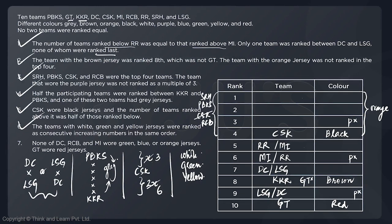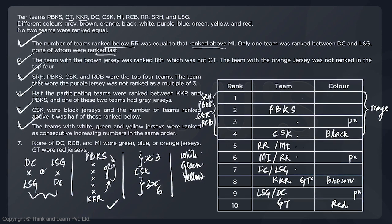Going back to statement four: KKR is now fixed at rank eight, and we need five teams between KKR and PBKS. Counting from rank two down to rank eight gives five teams between them, so PBKS must be at rank two.